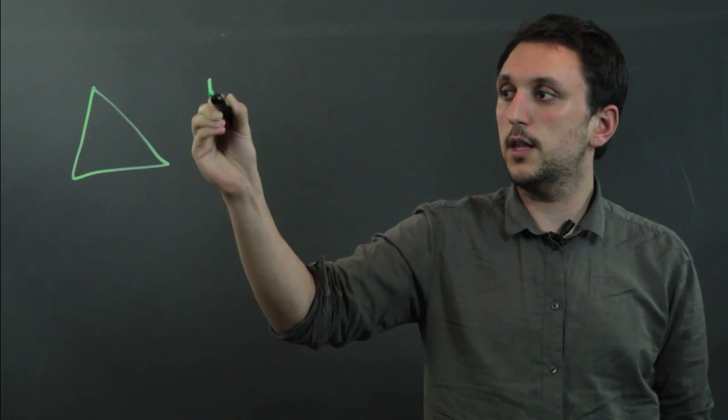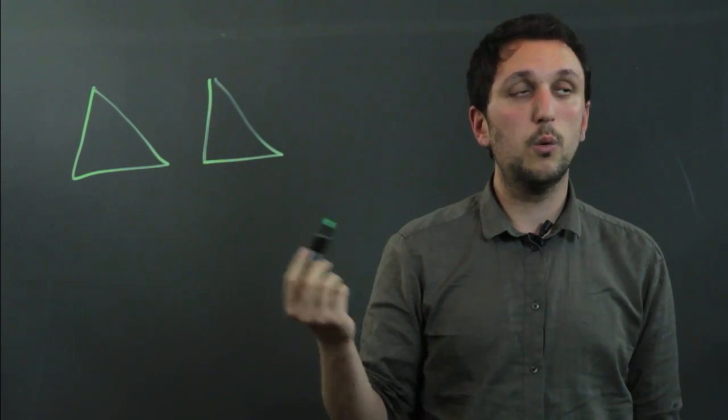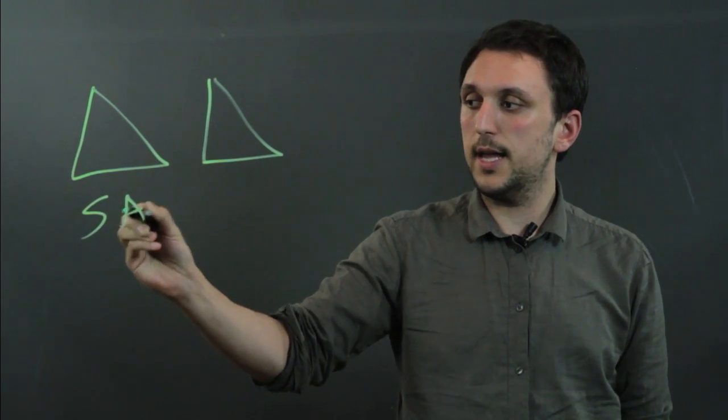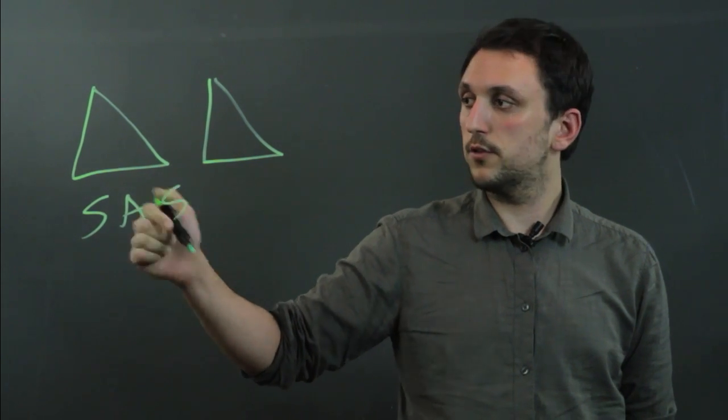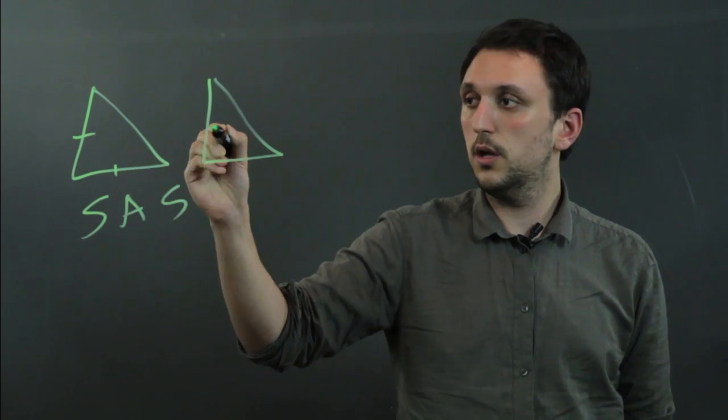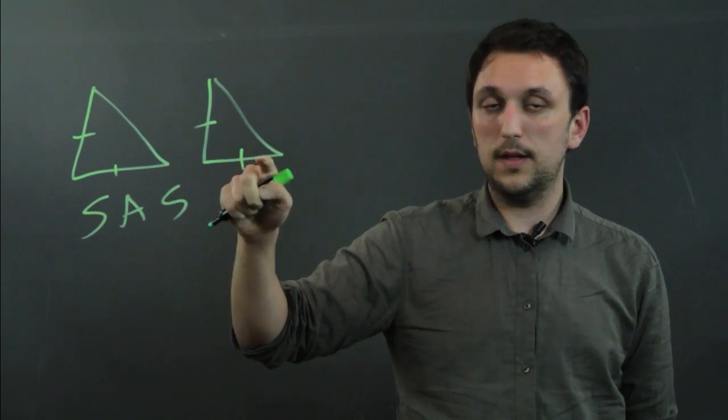So the postulates that say that two triangles are congruent, there's SAS or side angle side postulate which says that if we have this side and this side equal and this side and this side equal and they correspond.